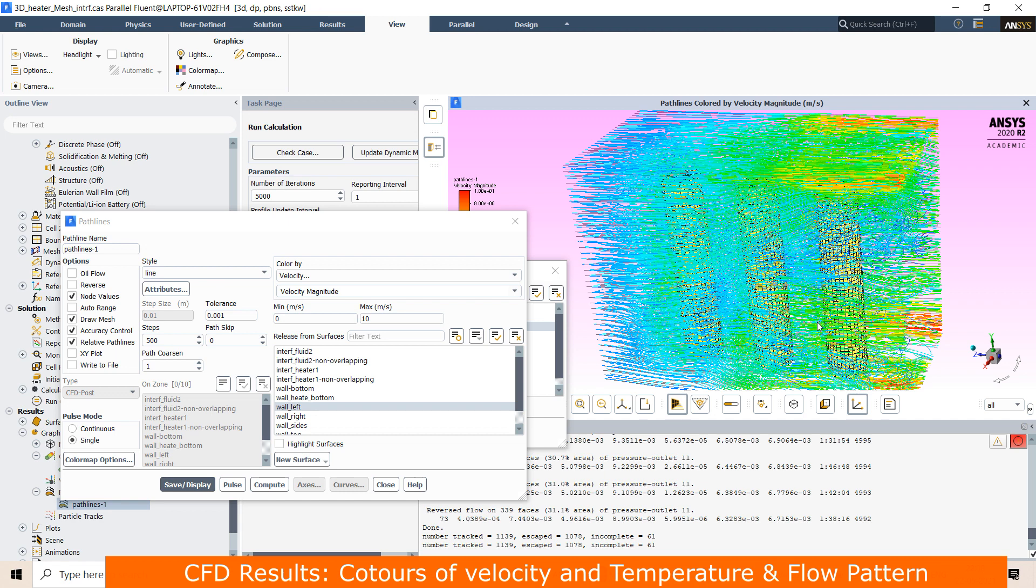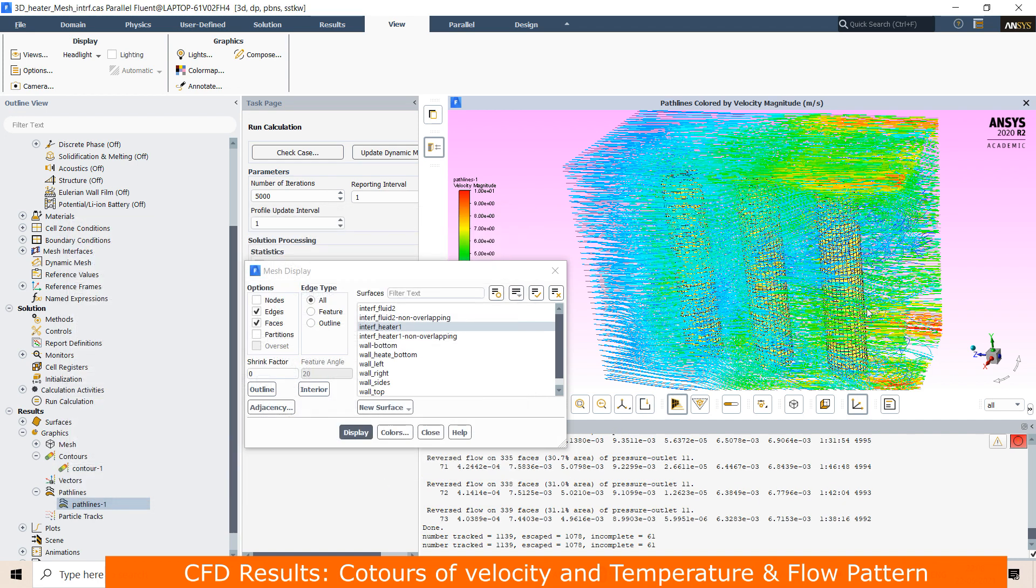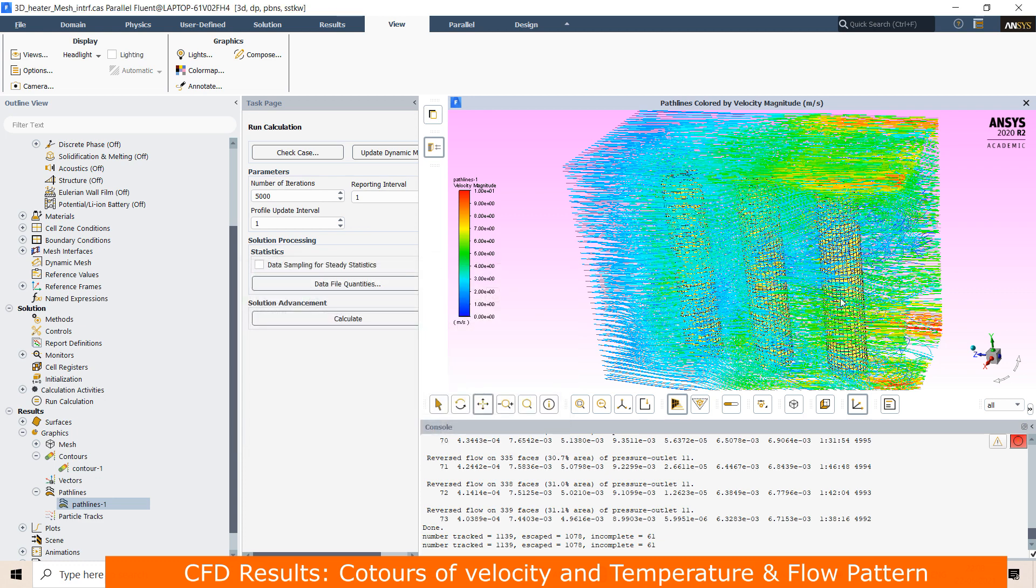We cannot define porosity explicitly across the domain. If you want to define explicitly, you have to split the domain into different parts as per the level of porosity. However, that may take more time for the simulation.